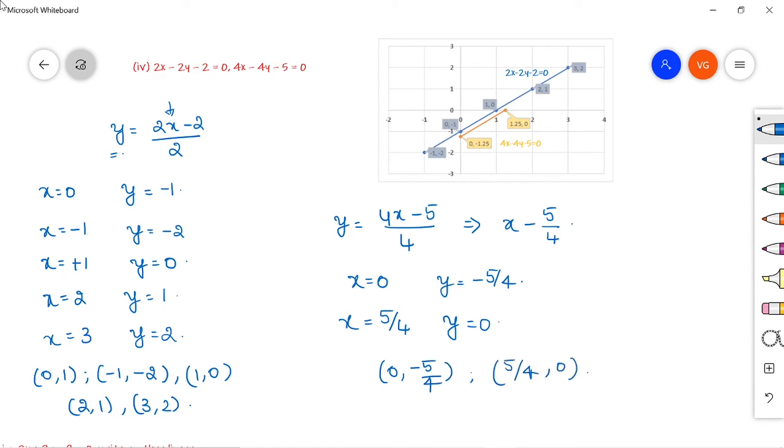Now I am marking the points on the graph sheet: (-1, -2), (0, -1), (1, 0), (2, 1), and (3, 2). Join all the points, it will form a straight line which indicates 2x minus 2y minus 2 equals 0.